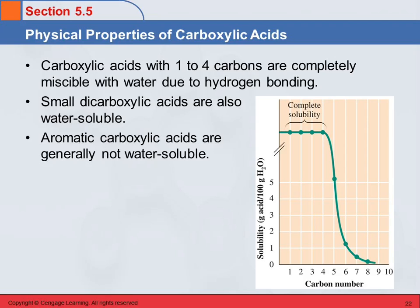Because as the carbon chain increases, the effect of the hydrogen bonding becomes less and less. This is a general trend: the solubility of organic compounds in water decreases as the compound gets larger. The aromatic carboxylic acids are generally not water soluble, which you can kind of figure out — because for it to be aromatic, it has to have at least one benzene ring and the carboxyl carbon, so that's seven carbons. And here on the graph, seven carbons is down here with very low solubility.